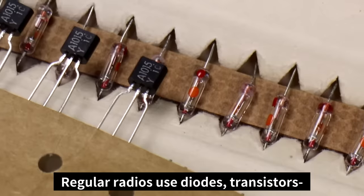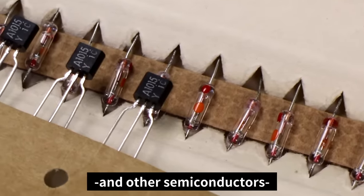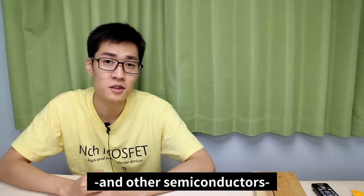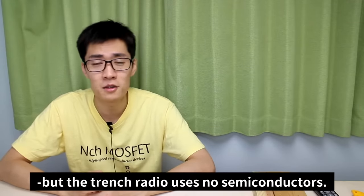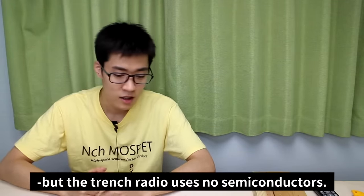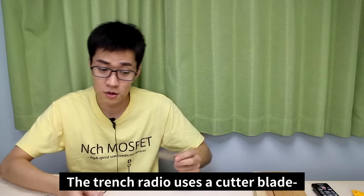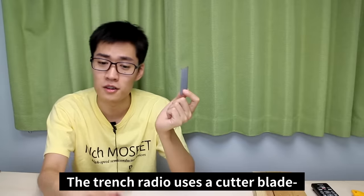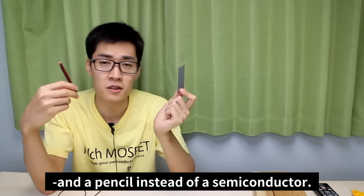Regular radios use diodes, transistors, and other semiconductors, but the trench radio uses no semiconductors. The trench radio uses a cutter blade and a pencil instead of a semiconductor.